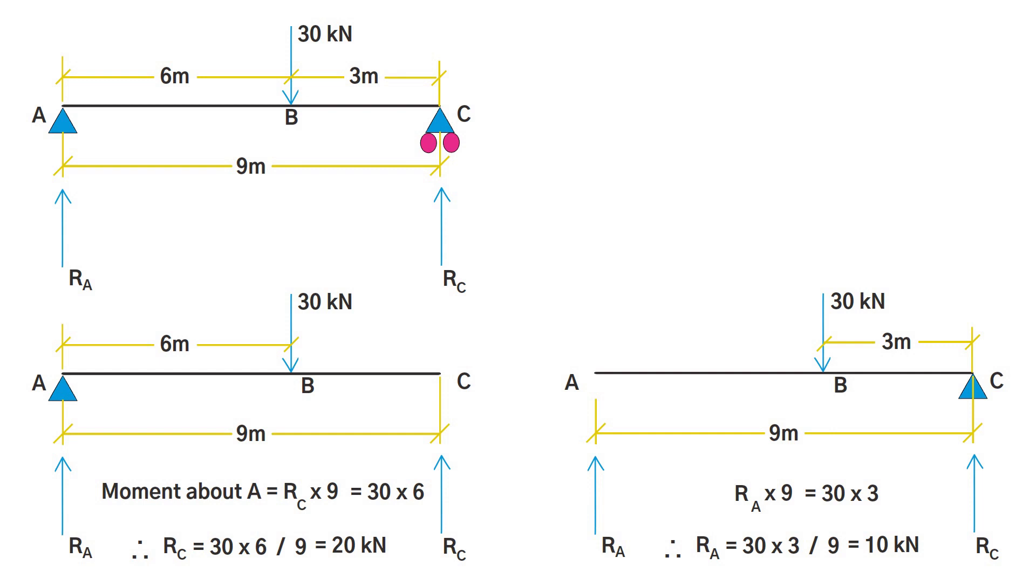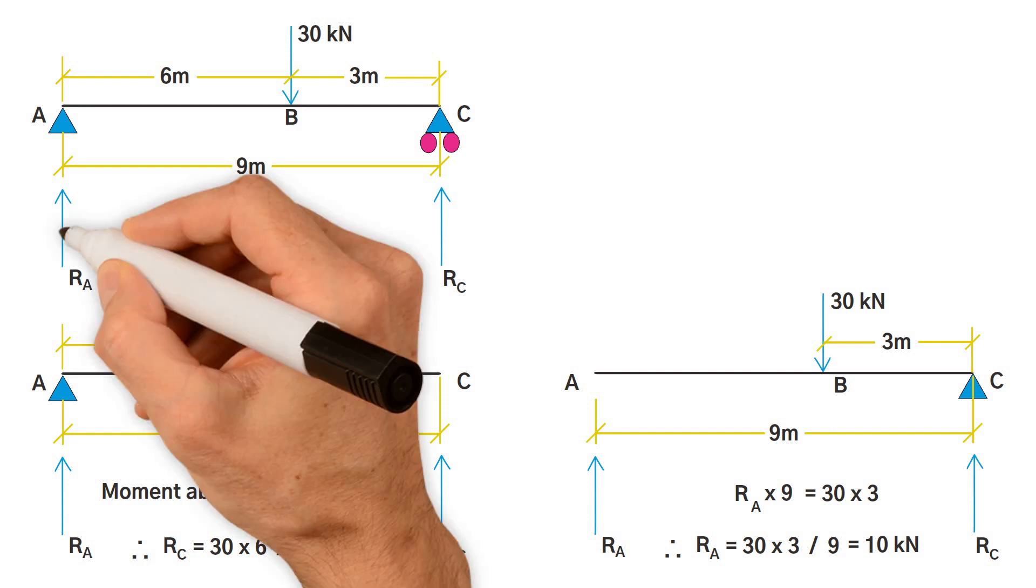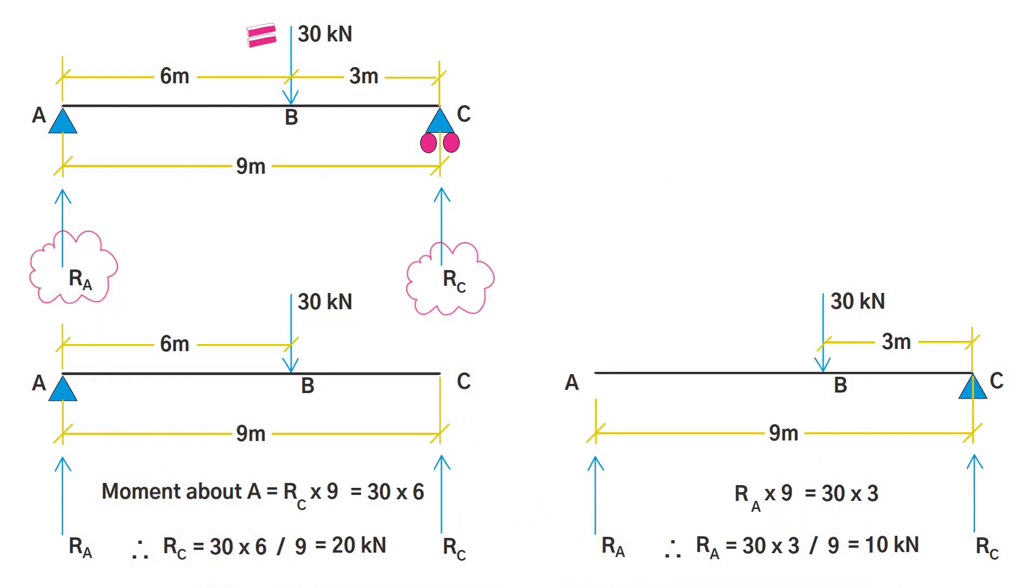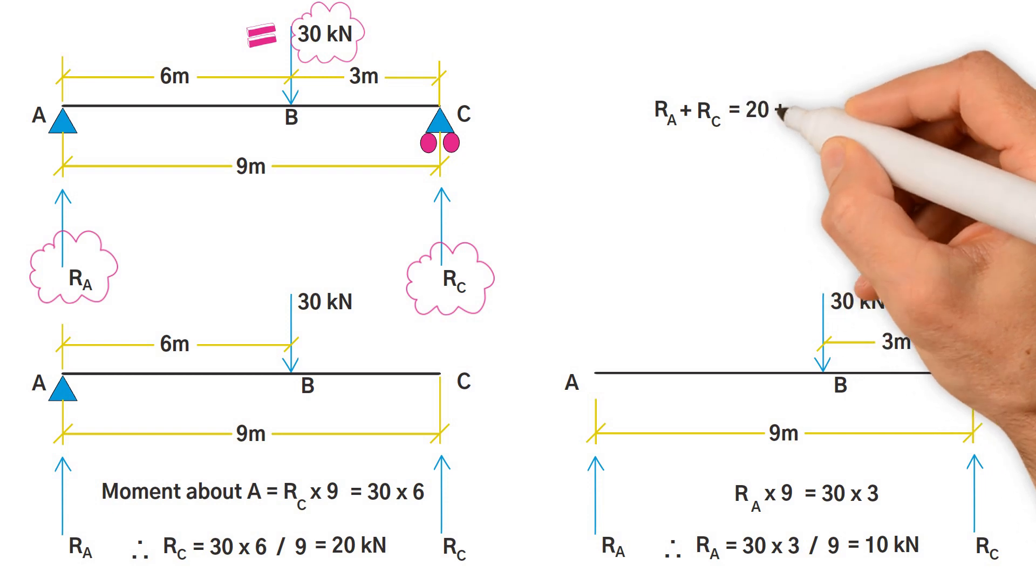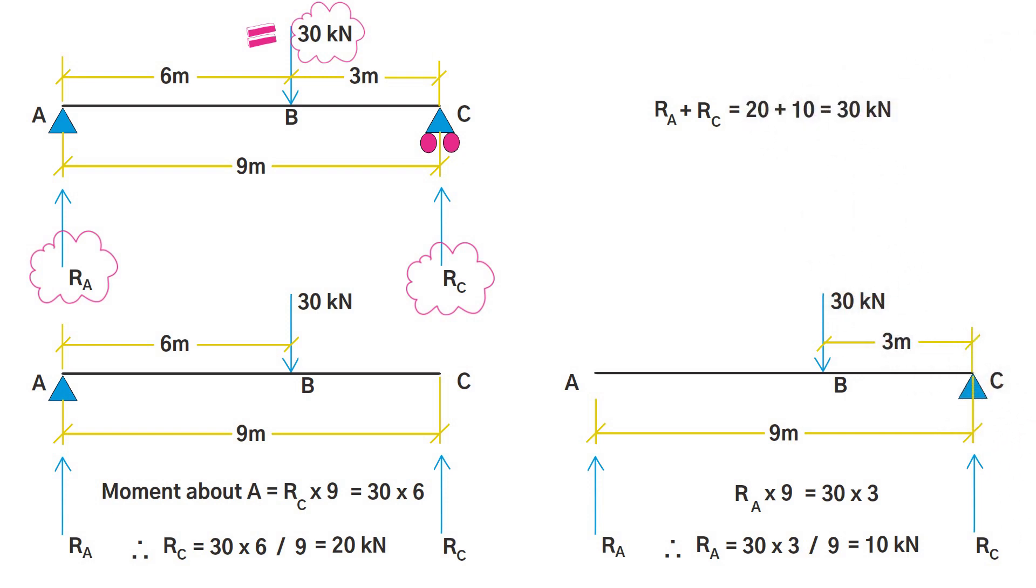Now what we need to do is undertake an equilibrium check to ensure that the results we obtained are correct for the vertical equilibrium. For vertical equilibrium, when you add these two reactions R_A and R_C, it should be equal to 30 kN. You can write R_A plus R_C is equal to 20 kN plus 10 kN, which is equal to 30 kN, and that is equal to the applied force. Therefore, the calculated results are correct for R_A and R_C reactions.